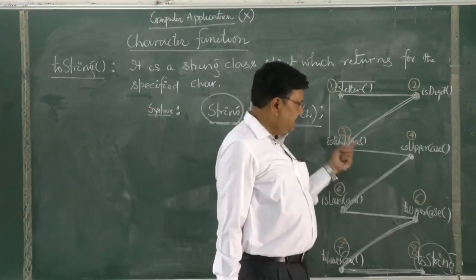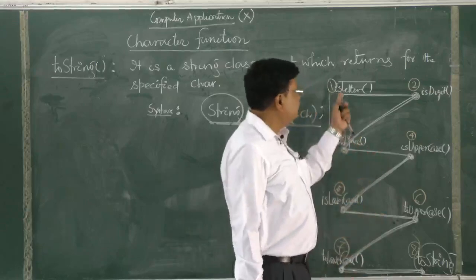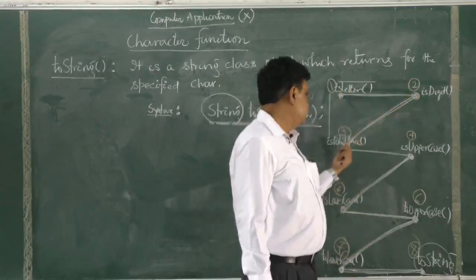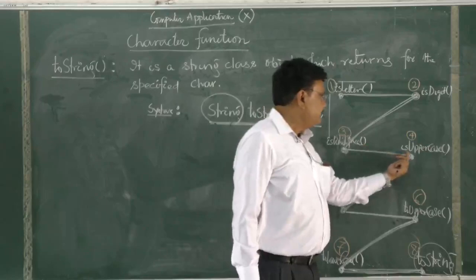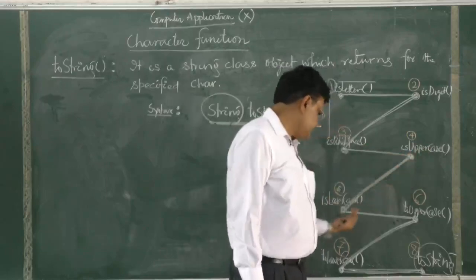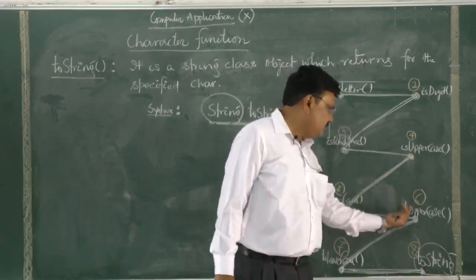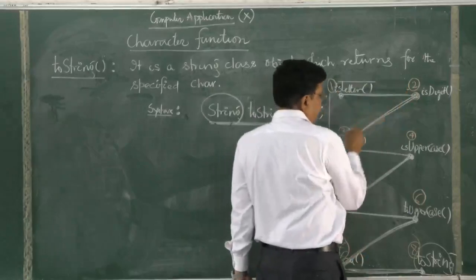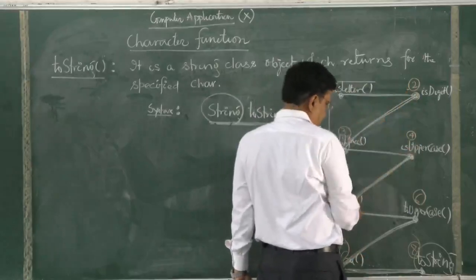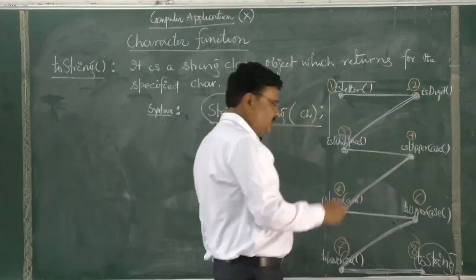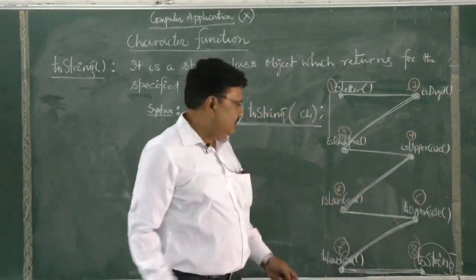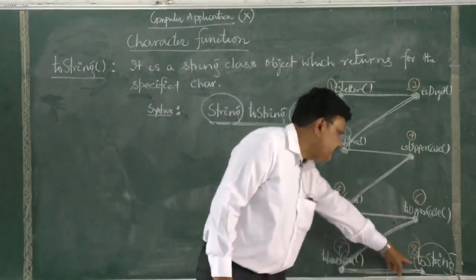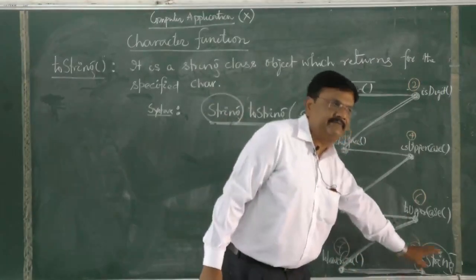I have drawn a figure. You can see: isLetter, isDigit, isWhiteSpace, isUpperCase, isLowerCase, and toUpperCase — these five all return Boolean type. Over here, toUpperCase returns character type, but toString returns string type.